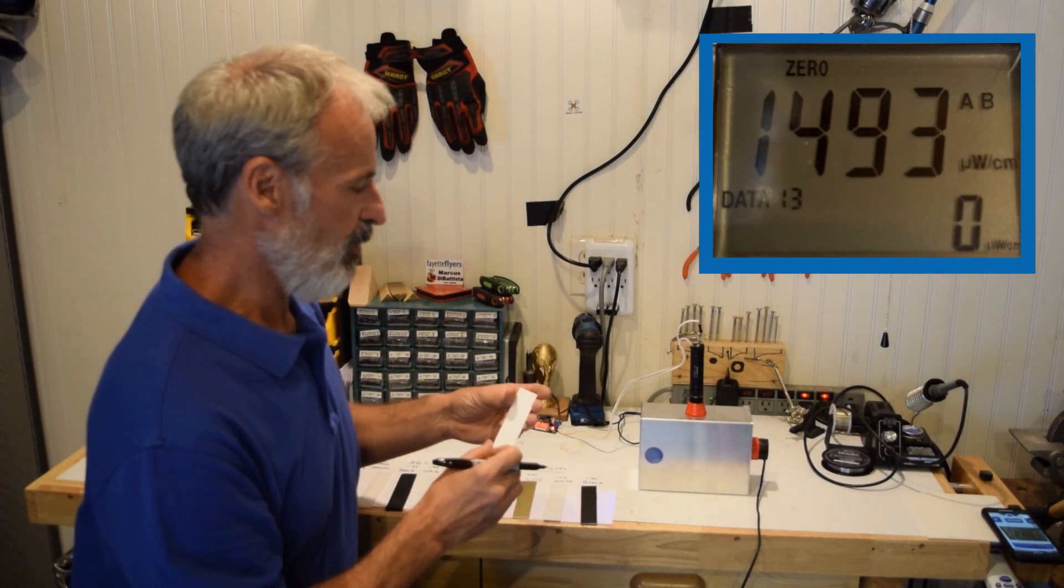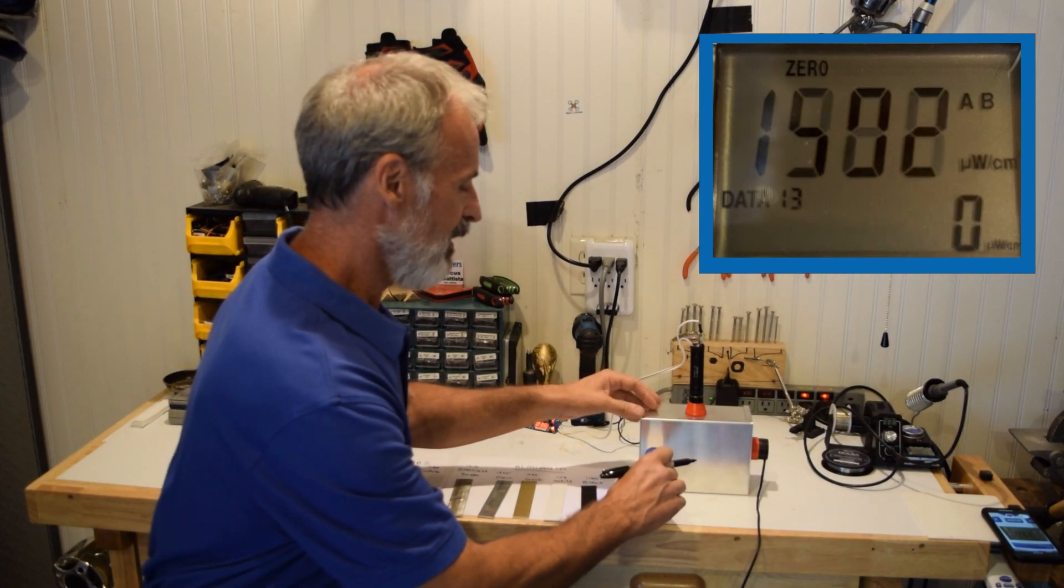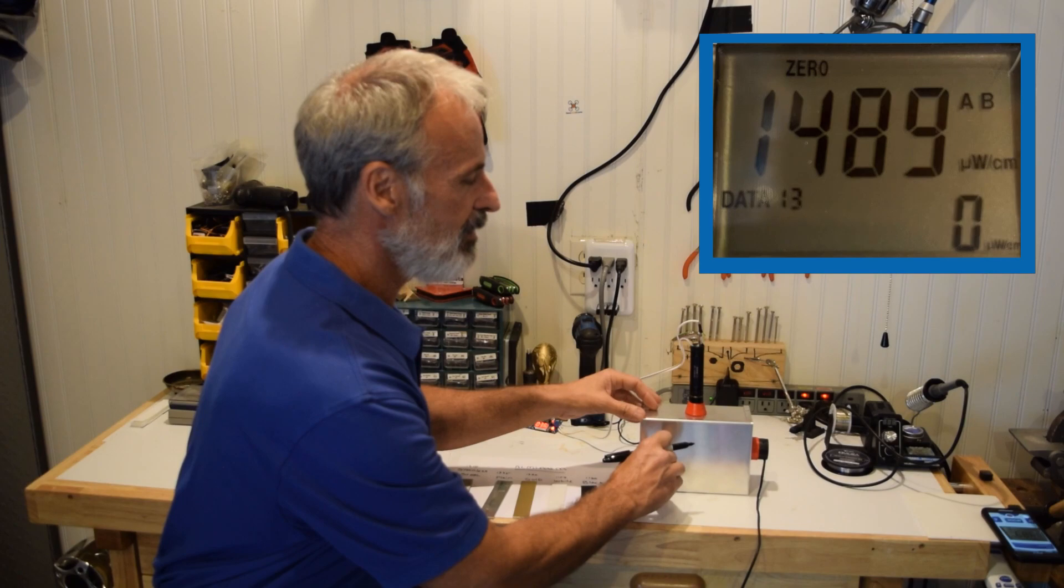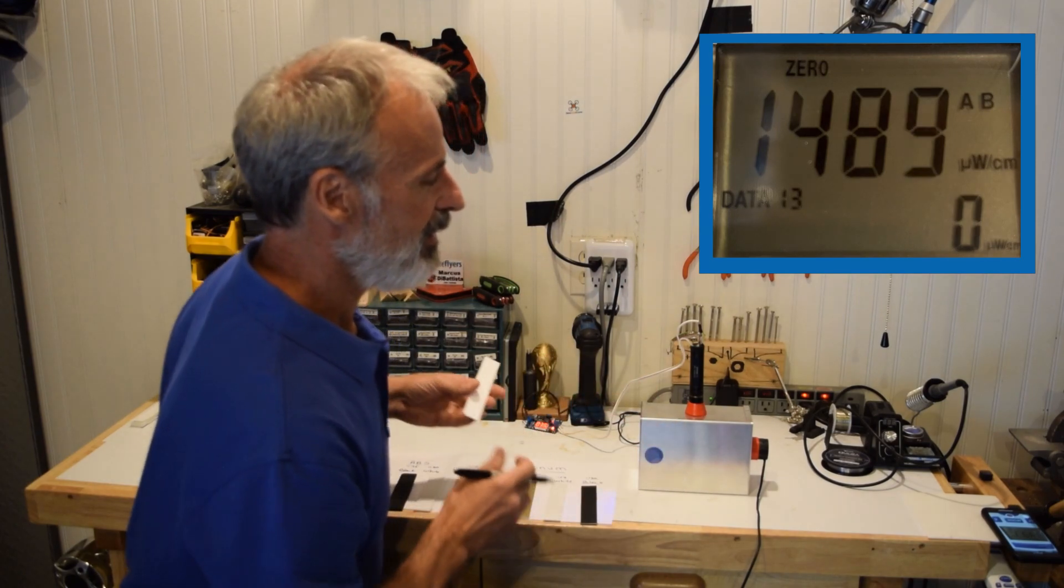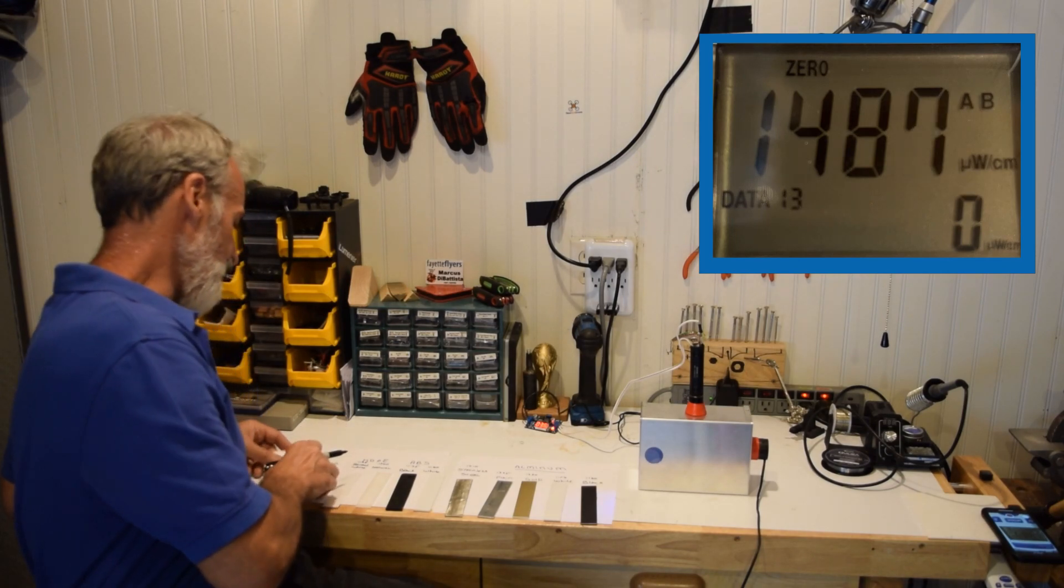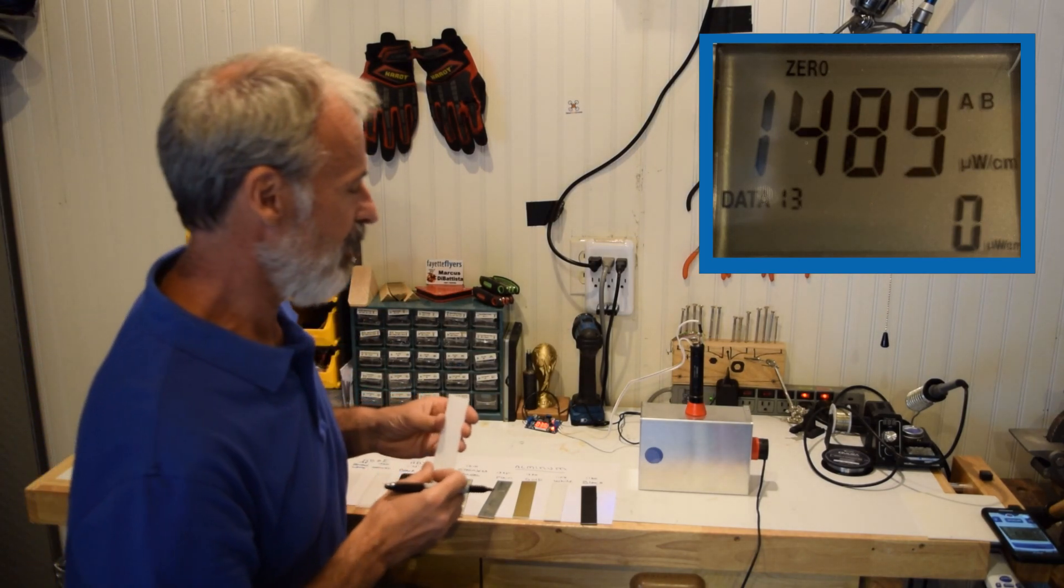Then of course, the Porex Vertec PTFE, which is 100% diffuse reflective. You can see 1,480. Basically no change. So almost nothing is being absorbed.